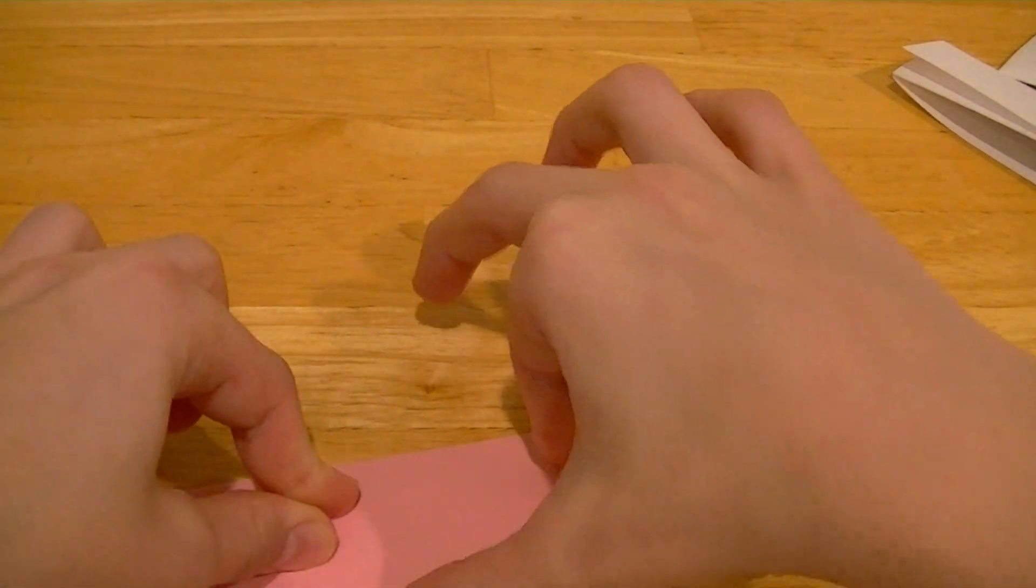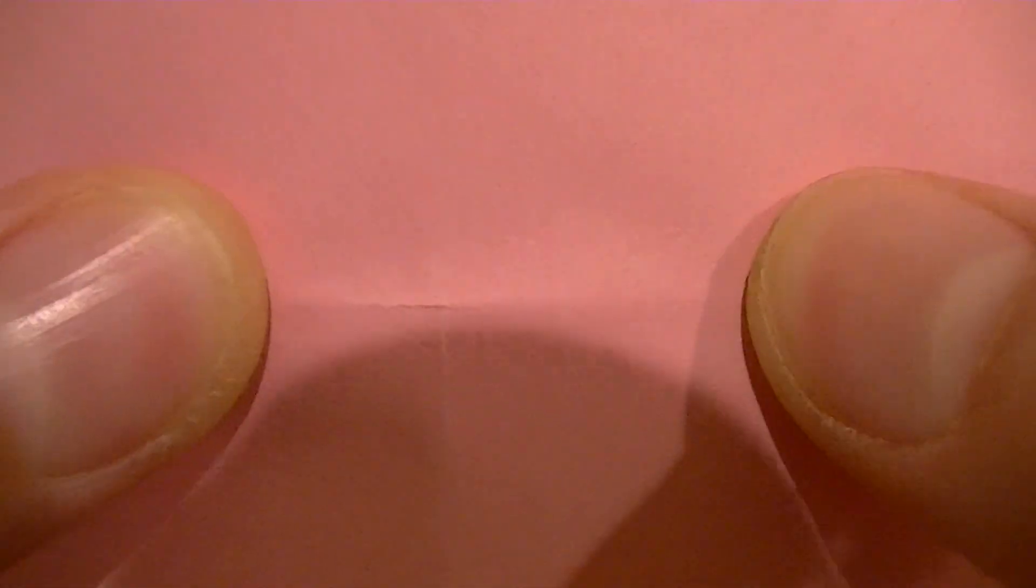And then you turn it around and do the same thing, or you rotate it I should say. Alright, and now you should have a little X right there.